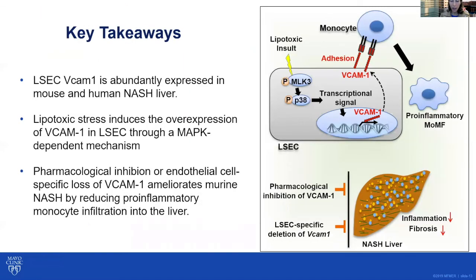Our key takeaways are that LSEC VCAM1 is abundantly expressed in mouse and human NASH liver. Lipotoxic stress induces the overexpression of VCAM1 in LSECs through a MAP kinase-dependent mechanism. Pharmacological inhibition or endothelial cell-specific loss of VCAM1 ameliorates murine NASH by reducing pro-inflammatory monocyte infiltration to the liver. Thank you for your attention.